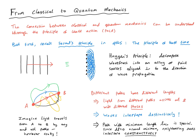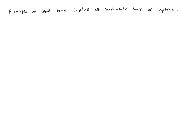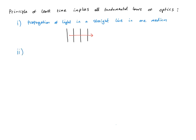So this is a variational principle with the same flavour as the principle of least action in classical mechanics. The principle of least time actually implies all of the fundamental laws of optics. For example, the propagation of light in a straight line in one medium — the path with the shortest length is also the path with the shortest time. However, we can easily concoct a scenario where the path with the shortest length is not the one with the shortest time, and actually light travels by the path that has the shortest time, not the shortest length. This is the situation described by Snell's law.